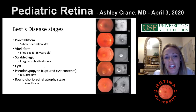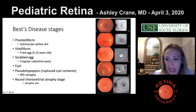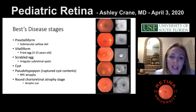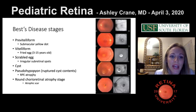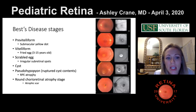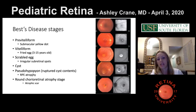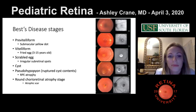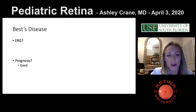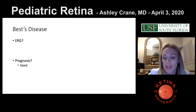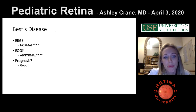Best disease — here are the stages. These patients often have vision better than you'd expect for the dramatic photos. Stages: pre-vitelliform with a submacular yellow spot; vitelliform showing a fried egg appearance in 3-to-15-year-olds; scrambled eggs with irregular subretinal spots, cyst, pseudohypopion; and finally chorioretinal atrophy — the atrophic scar. The ERG is normal, the EOG is abnormal. That's a frequent question. It carries a good prognosis.